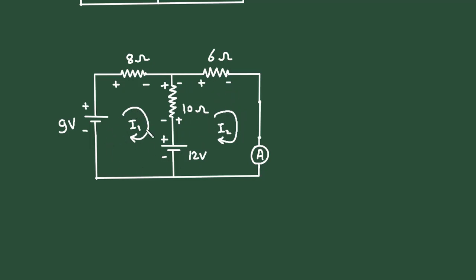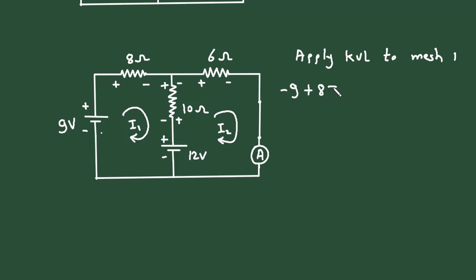Now let's apply KVL to mesh number 1. Starting from this point, it will be minus 9, then plus 8I1, then plus 10. This 10 Ohm is common to both mesh 1 and mesh 2, so it will be 10(I1 minus I2), then plus 12, equals 0.